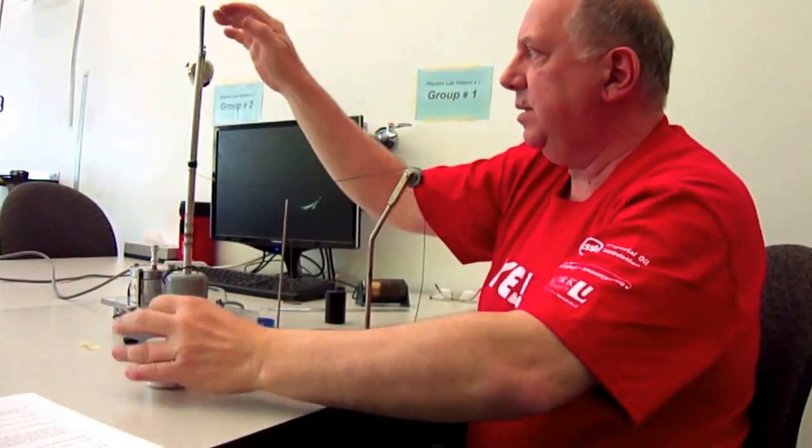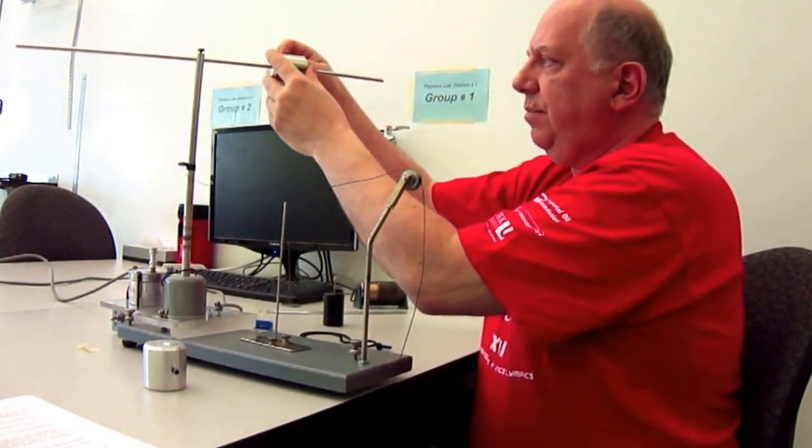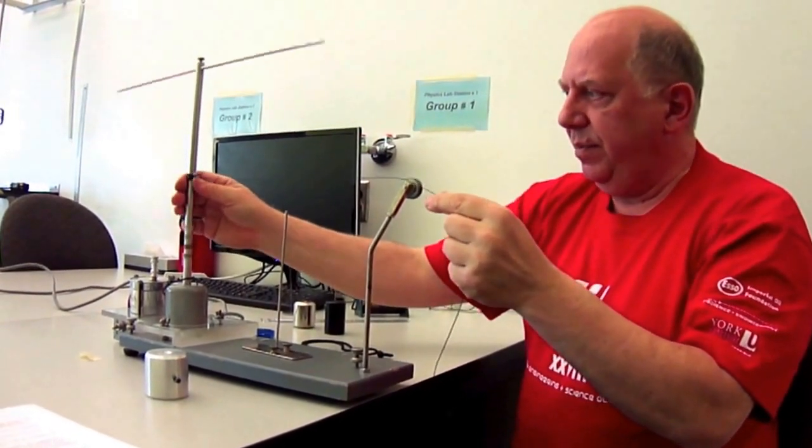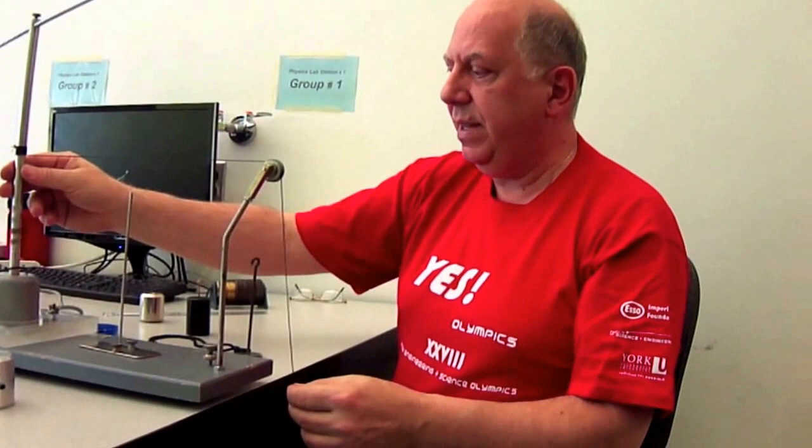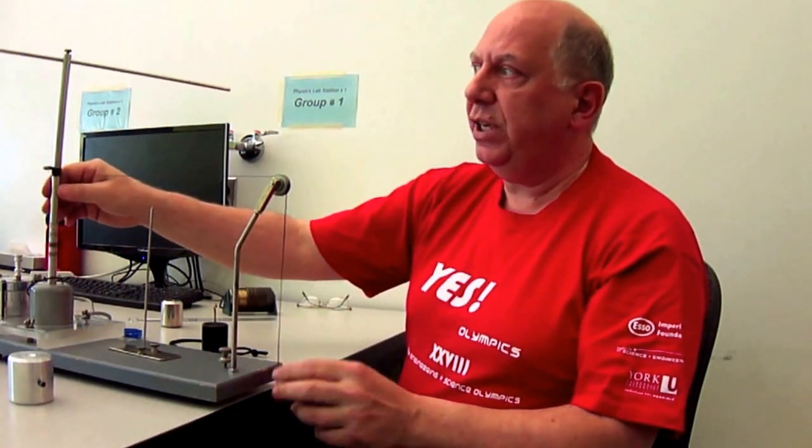Okay, so for this part of the experiment we remove these masses after we measured what their radiuses are and wrap the string around the shaft. Everything is set up. You do not attach the heavy mass, otherwise this thing will spin very very fast. You attach the 50 gram mass like this.